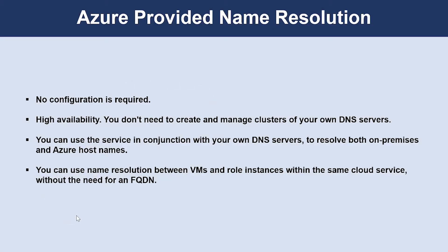If you use Azure provided name resolution, these are the listed features you will get. You don't need any configuration, you get high availability, and you don't need to create and manage clusters. You can also use it in conjunction with your own DNS servers to resolve both on-premises and Azure host names. You can use name resolution between VMs in a virtual network that use the Azure Resource Manager deployment model without the need for an FQDN.